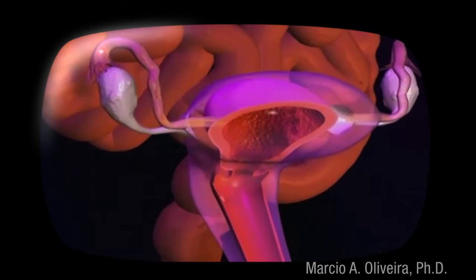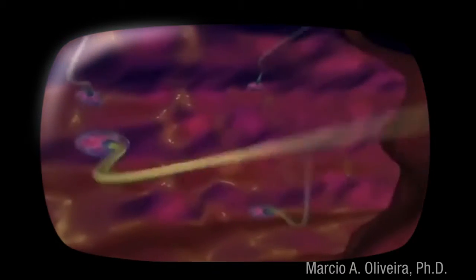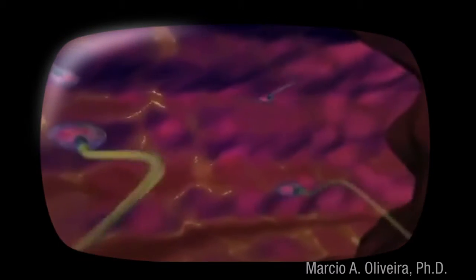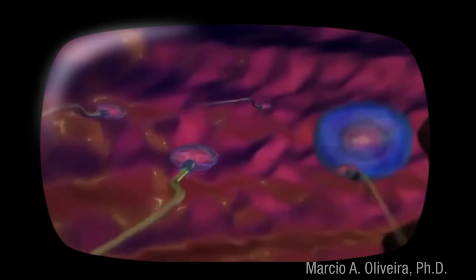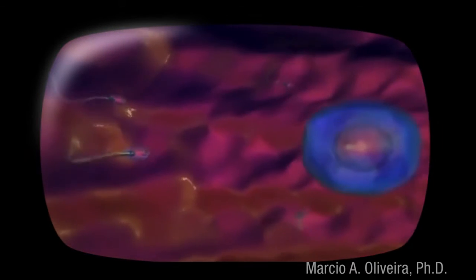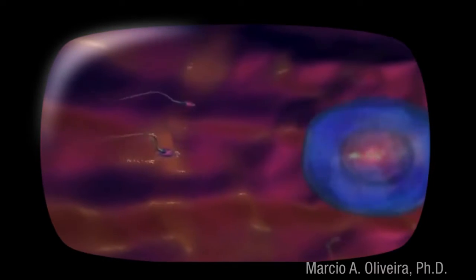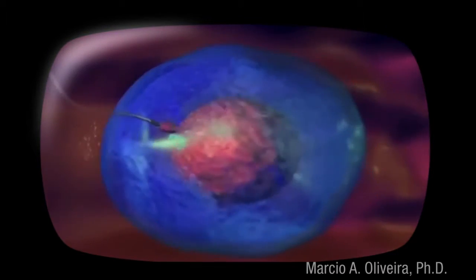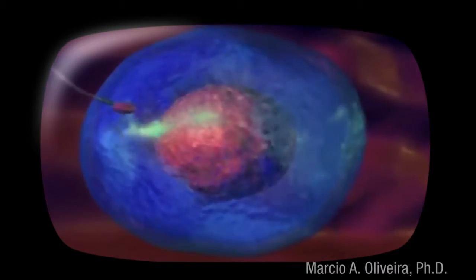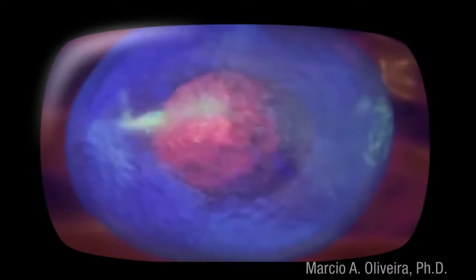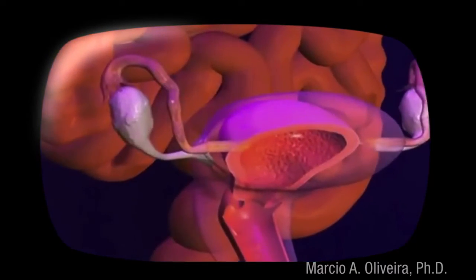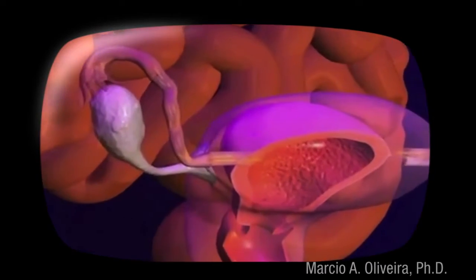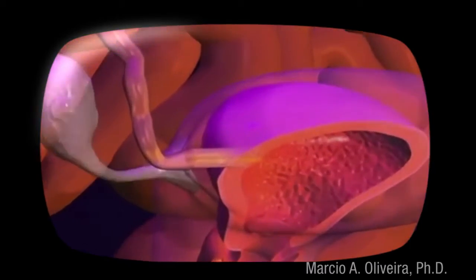After an egg is released from an ovary and is fertilized, it travels slowly through the fallopian tube to the uterus. During this time, it begins to divide until it has grown to about 100 cells. The egg, now called a blastocyst, then implants in the tissue lining the wall of the uterus.